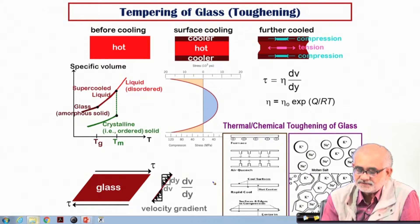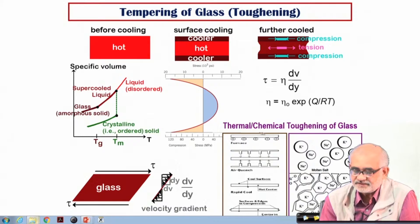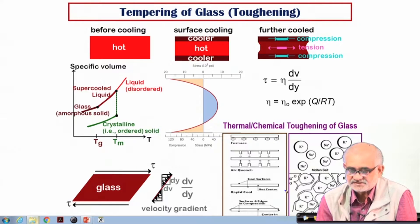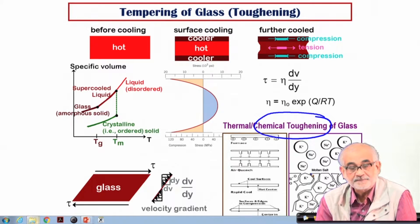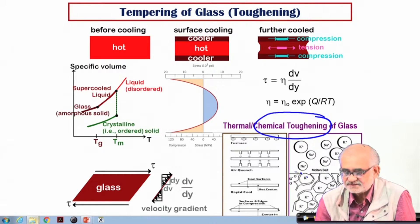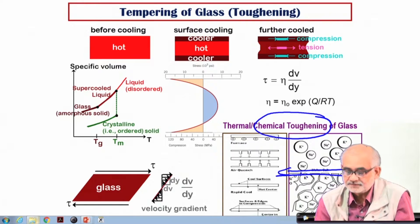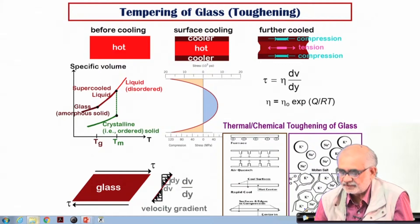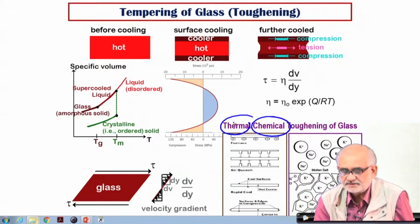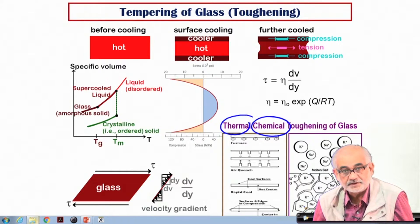A similar strategy can be applied not by thermal treatment but by chemical treatment. This is known as chemical toughening of glass — the glass is exposed to certain chemicals that create chemical reactions at the surface, leading to substitutional reactions where bigger cations replace smaller ones. This creates a reaction product layer on the surface with larger ions, which also produces residual compressive stresses. Both thermal tempering and chemical tempering can make glass more resistant to failure.